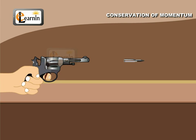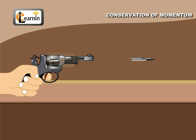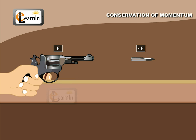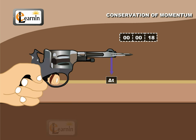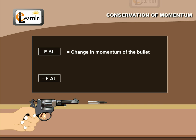A bullet is fired from a gun, and the force on the bullet by the gun is F. The force on the gun by the bullet is negative F, according to the third law of motion. The two forces act for a common time interval of delta t. According to the second law of motion, F delta t is the change in momentum of the bullet, and negative F delta t is the change in the momentum of the gun.